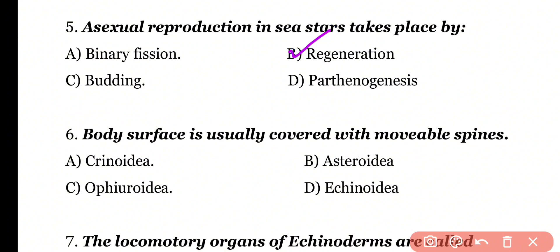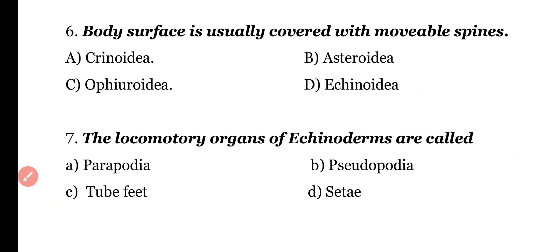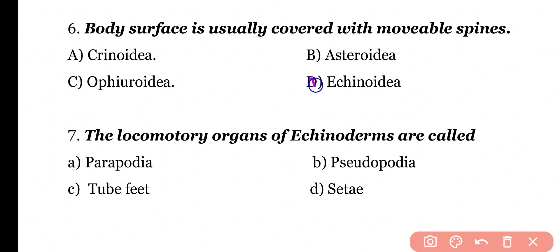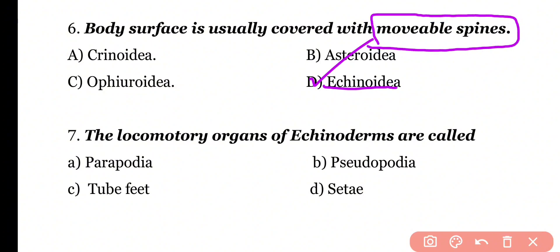Question 6: Starfish is usually covered with movable spines in Crinoidia, Asteroidia, Ophiroidia, or Echinoderms? Correct answer is Option D. The Echinoidia class, which includes sea urchins, have movable spines around their body surface.